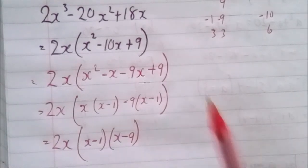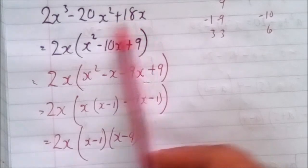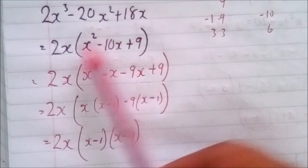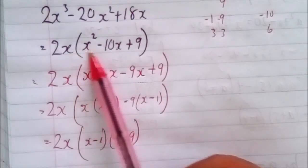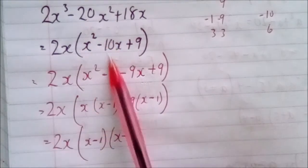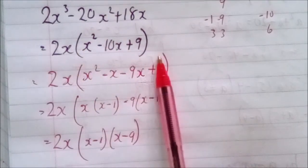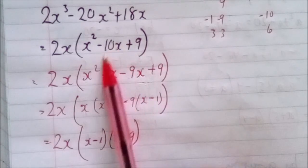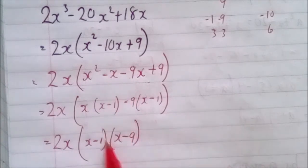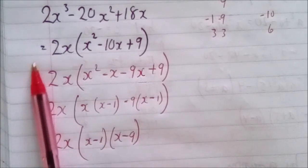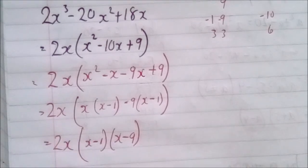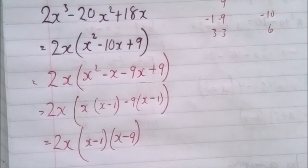Let's go over it again. First, factor out the GCF which is 2x — that reduces the exponents and coefficients. Then you work with the trinomial inside as if you only had that trinomial by itself. But don't forget what you factored out before; that 2x needs to be kept in the final answer.